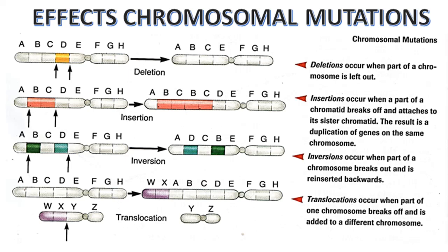Let's explain them one by one. What is deletion? Deletions occur when part of a chromosome is left out — that is, when there is loss of part of a chromosome. Insertions occur when a part of a chromatid breaks off and attaches to its sister chromatid. The result is a duplication of genes on the same chromosome.